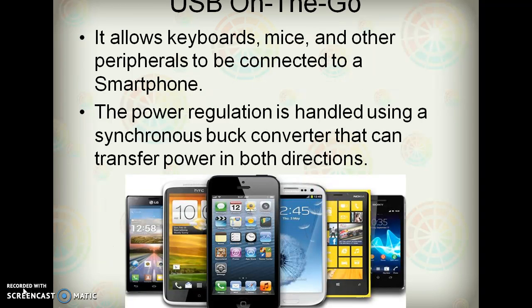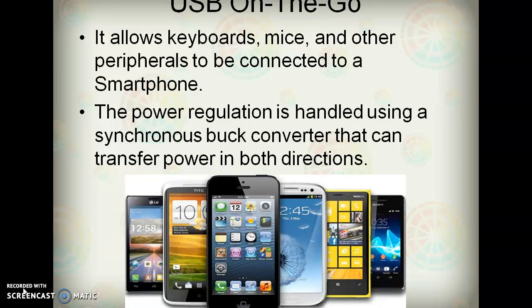USB on the go: the USB on the go allows keyboards, mice, and other peripherals to be connected to your smartphone. The peripheral device draws power from the USB port on the phone. The power regulation is handled using a synchronous buck converter that can transfer power in both directions. When the phone is plugged into a battery charger, the buck converter runs as a buck converter to charge the lithium battery in the phone. When the peripheral is plugged in, the buck converter runs backwards as a boost converter to generate 5V from the lithium battery.